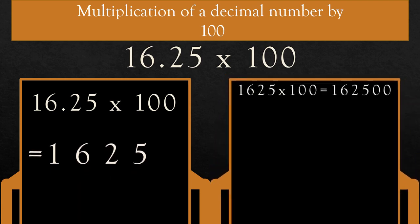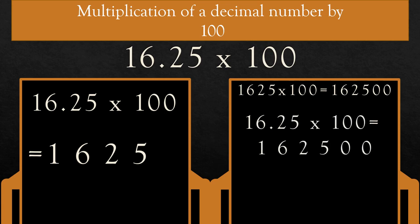In another way: multiply 16.25 × 100, ignoring the decimal point. Everyone knows 1625 × 100 is equal to 162500. Now, how many digits after the decimal in 16.25? Yes, two. So count two digits from the right — 1, 2 — and place the decimal in the product. So the answer is 1625.